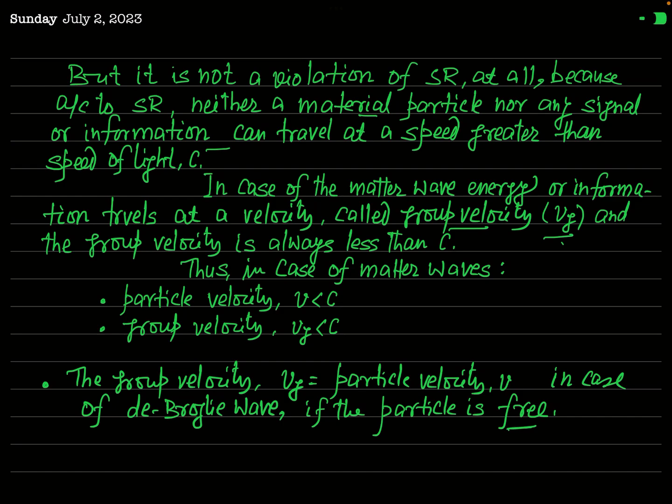According to special relativity, information cannot travel faster than light. When talking about the de Broglie matter wave, information is carried at a speed called group velocity, and that group velocity is not greater than c — it is less than c. For a free particle in motion, the group velocity vg is equal to the particle velocity. This is only for a free particle; if the particle is not free, then vg and v are related by a dispersion relation. But for a free de Broglie particle, group velocity equals particle velocity.